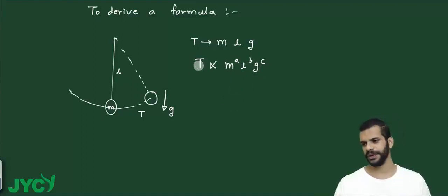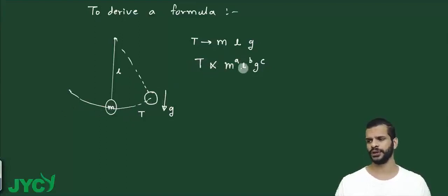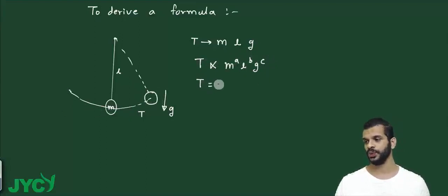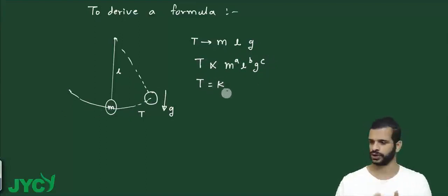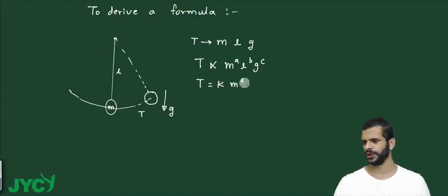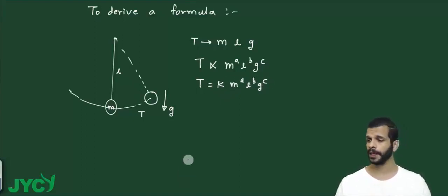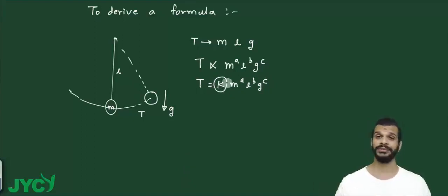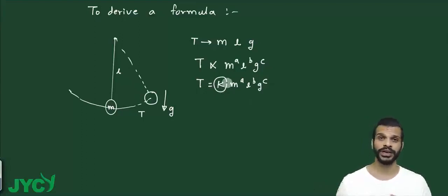This is the time period. The time period of the pendulum is proportional to m to the power a, l to the power b, g to the power c. So I will write time period equals some constant k — which is dimensionless — into m to the power a, l to the power b, g to the power c. The constant k has no dimension, so we analyze the rest.